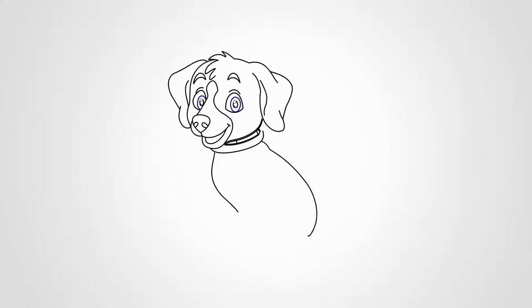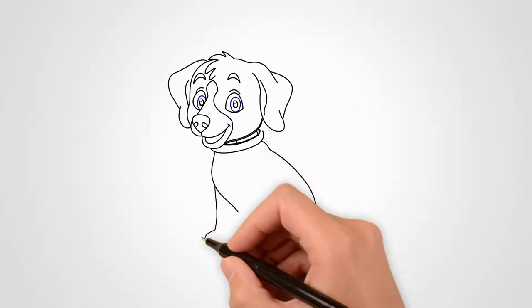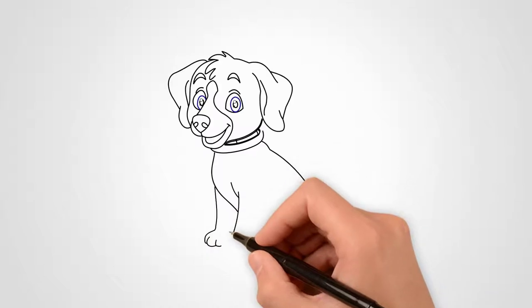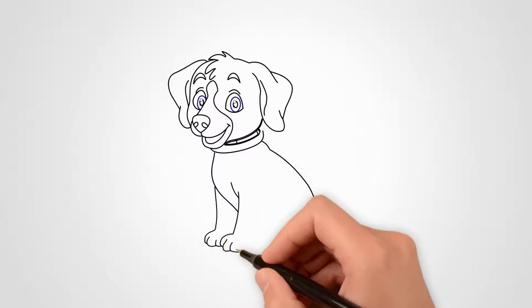Draw a collar around the puppy's neck. It is white and comfortable. Draw the body of the dog in smooth lines from top to bottom.